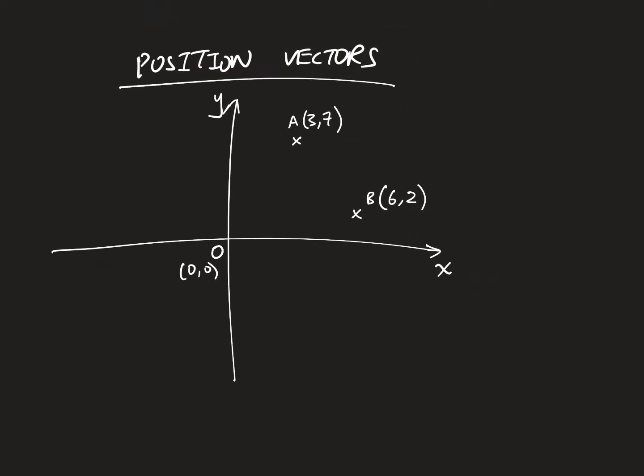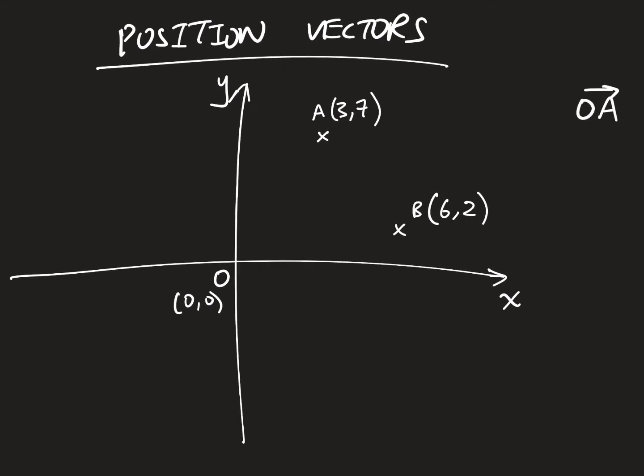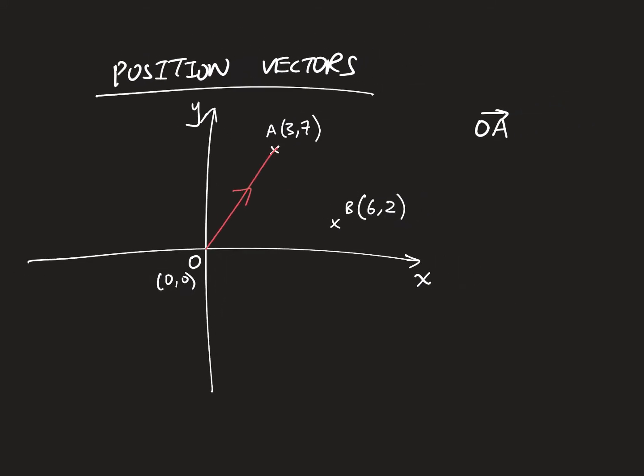And we can then say that if I want to know the position of point A, let's call that OA, the vector OA. And you've probably guessed it. Since you're starting from 0, 0, that will give me 3 units in the x direction, and 7 units in the y direction, and that is OA.